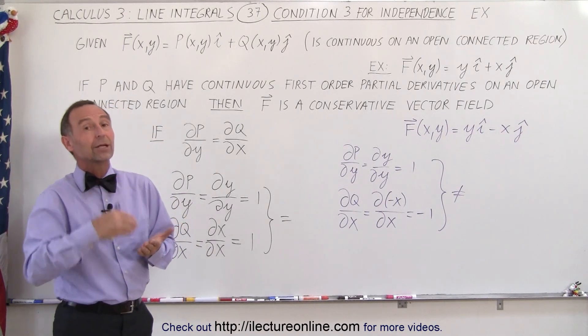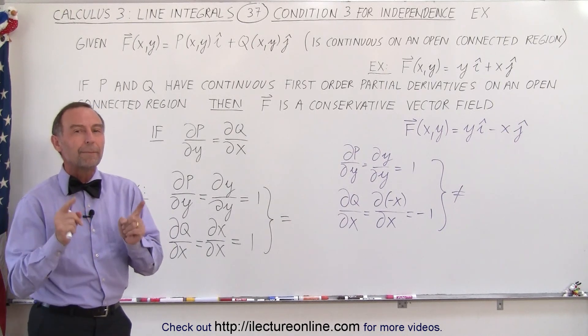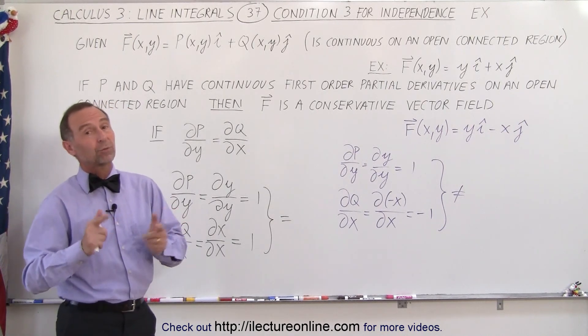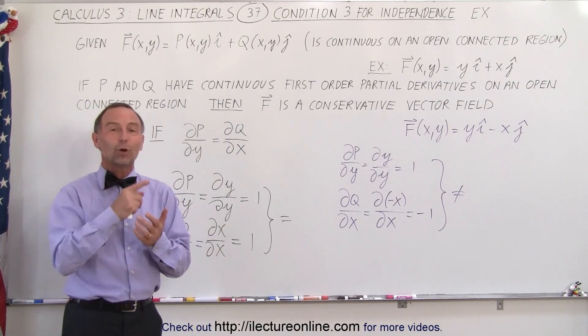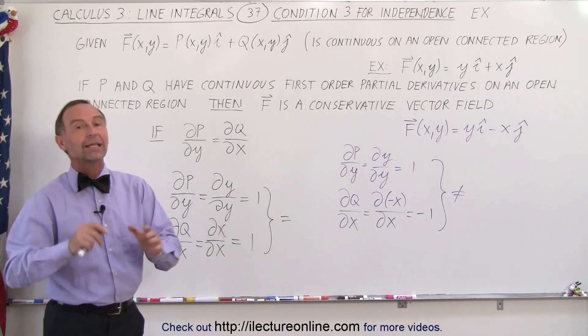Which means if we do a line integral over that vector field, it will be path-dependent. Different paths will give us different results. And if we do a line integral over a closed loop, it will not equal zero.